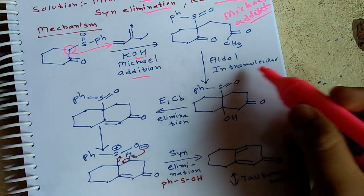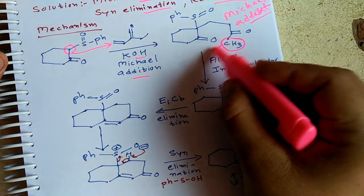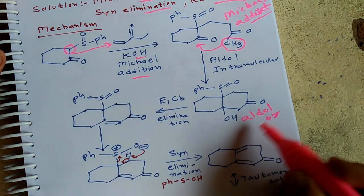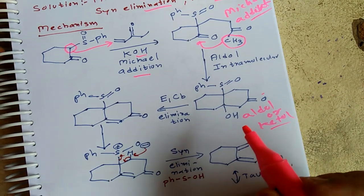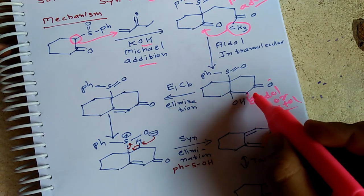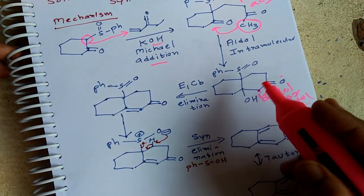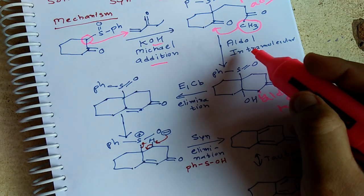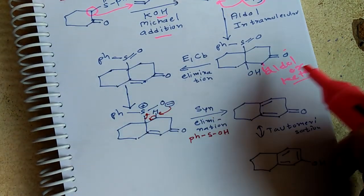The second step is intramolecular aldol condensation. A proton gets removed and attacks intramolecularly, giving the aldol or ketol product — ketol is more appropriate, but aldol condensation is the common term. By the E1cb mechanism, this proton is removed and a double bond forms, as in standard aldol direction. The combination of Michael addition and intramolecular aldol condensation is commonly referred to as the Robinson annulation.